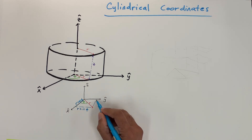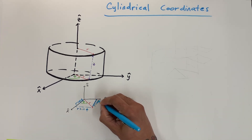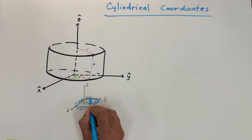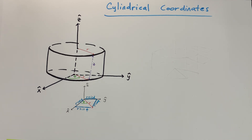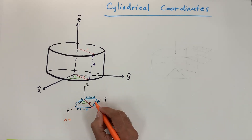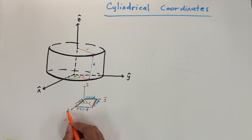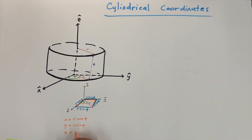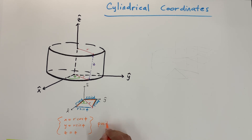Using opposite over hypotenuse we have R sin φ, and adjacent over hypotenuse gives R cos φ. So the X position is R cos φ, the Y position is R sin φ, and for Z we just have Z. This is the position in cylindrical coordinates.